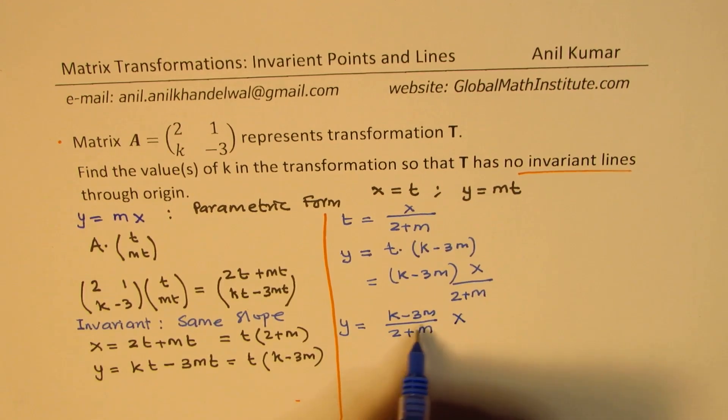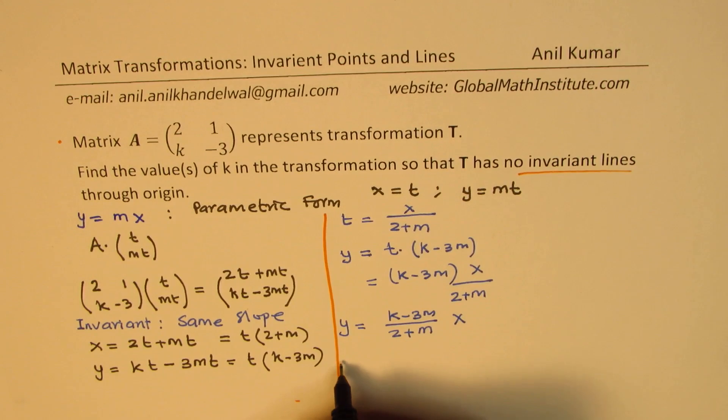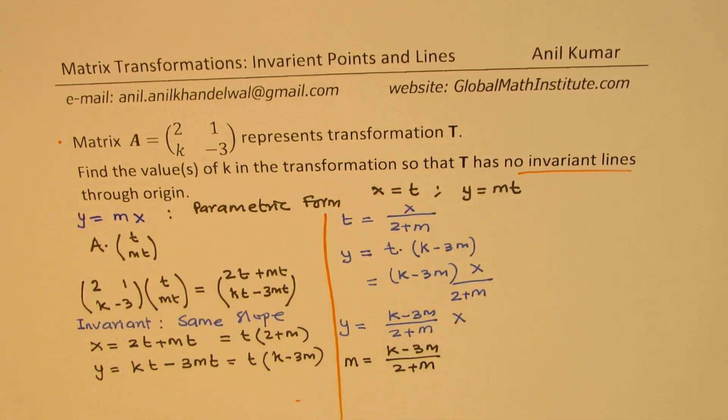So the slope here should be k minus 3m. Equate slope: m equals k minus 3m over 2 plus m. So once we equate slope, this is what we do to find invariant points. So we are looking for invariant line. So invariant line through origin should have same slope.